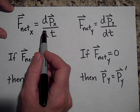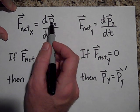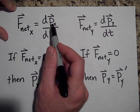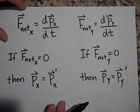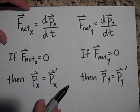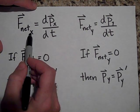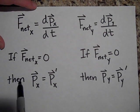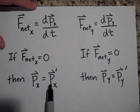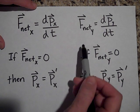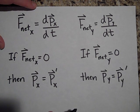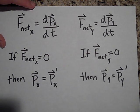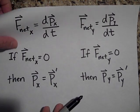You can get from here to F-net equals ma pretty quickly by making p equal to mv, pulling the m out, and getting m times dv/dt, which is mass times acceleration. Notice that if the net force is zero in the x-direction, then momentum will be conserved in the x-direction. And if F-net is zero in the y-direction, momentum is conserved in the y-direction as well. Like any vector quantity, you can break it into x and y-directions and handle them separately.